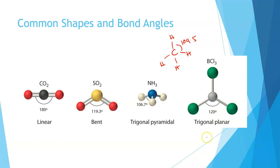A note on trigonal planar: as discussed previously, boron is stable with six electrons in its valence shell. So whenever we have boron as the central atom, we see a trigonal planar structure with three bonding pairs evenly distributed. These form the vertices of an equilateral triangle, giving bond angles of 120 degrees.